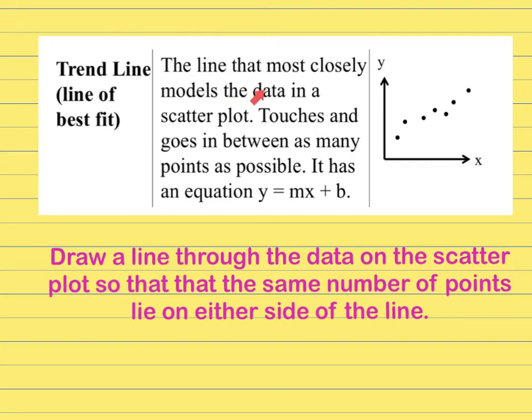A trend line is something that follows the pattern or the data in the scatter plot itself. It can touch some of the dots, and the main thing that we want is that when you draw the line through the data, you want to have the same number of points or equal number of points on either side of the line that you make.